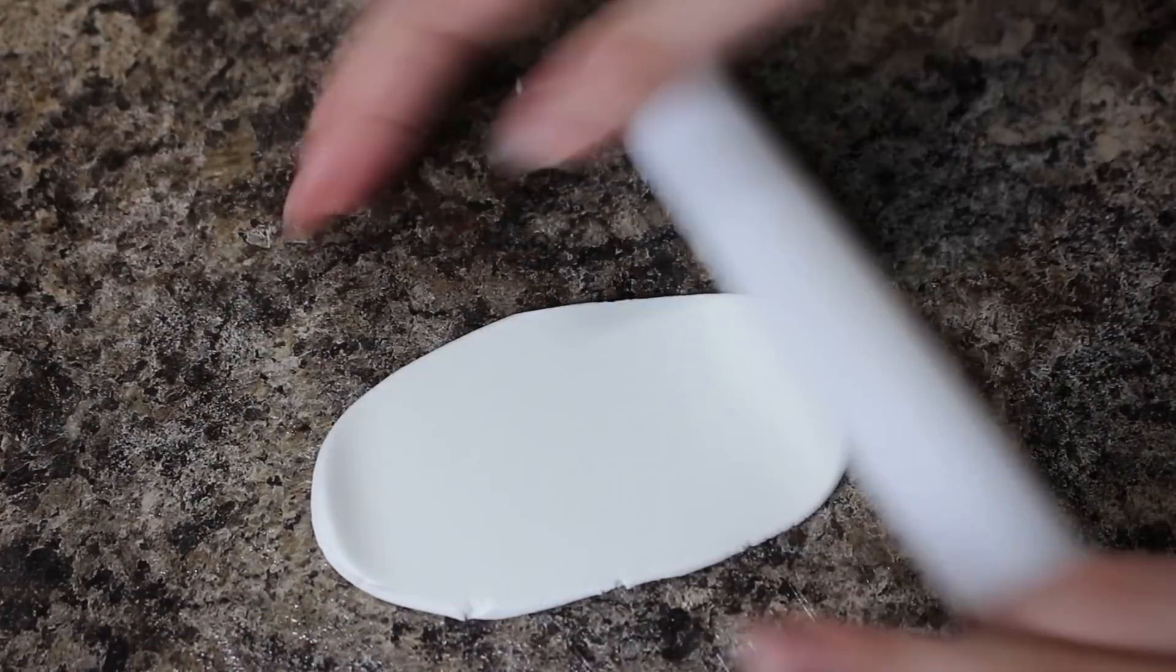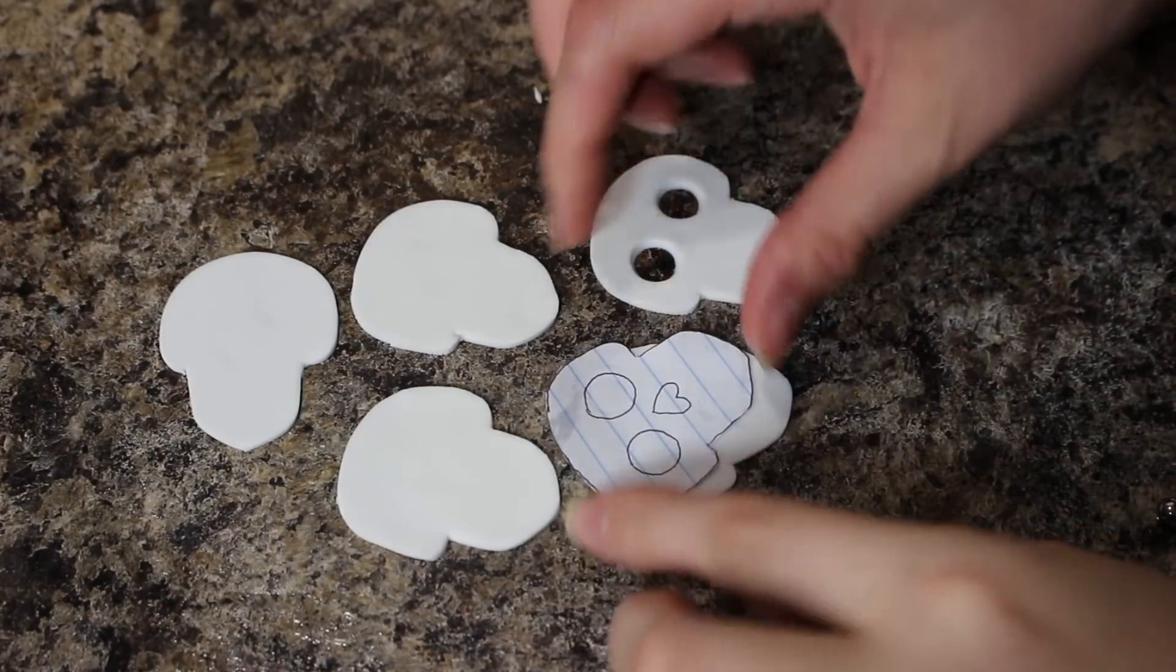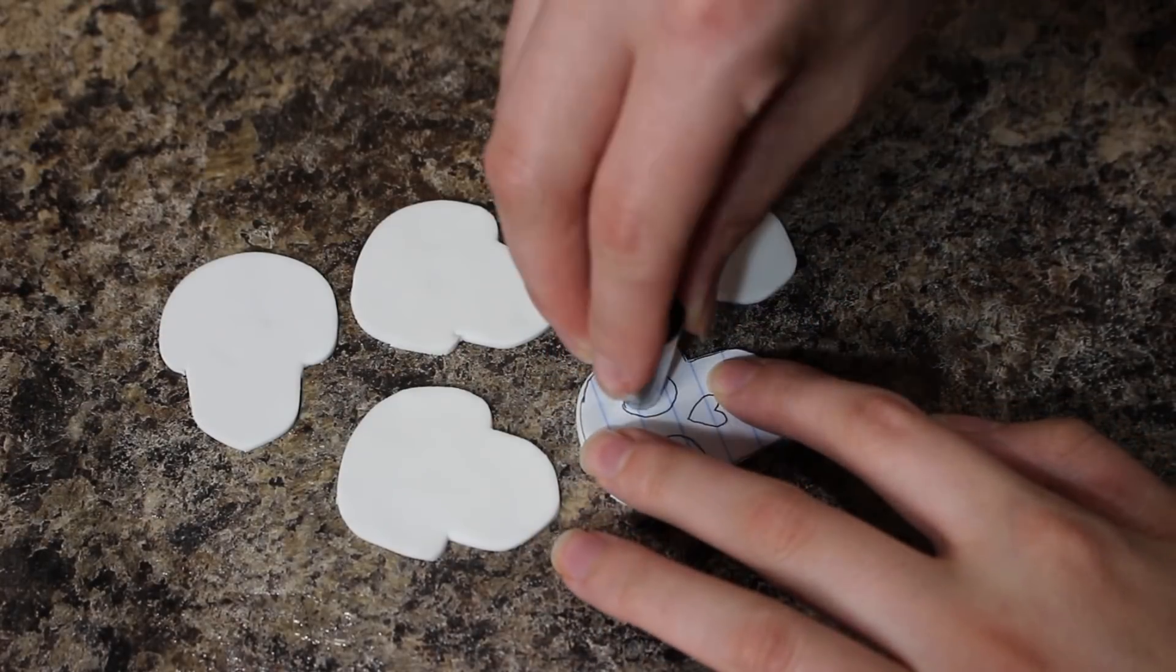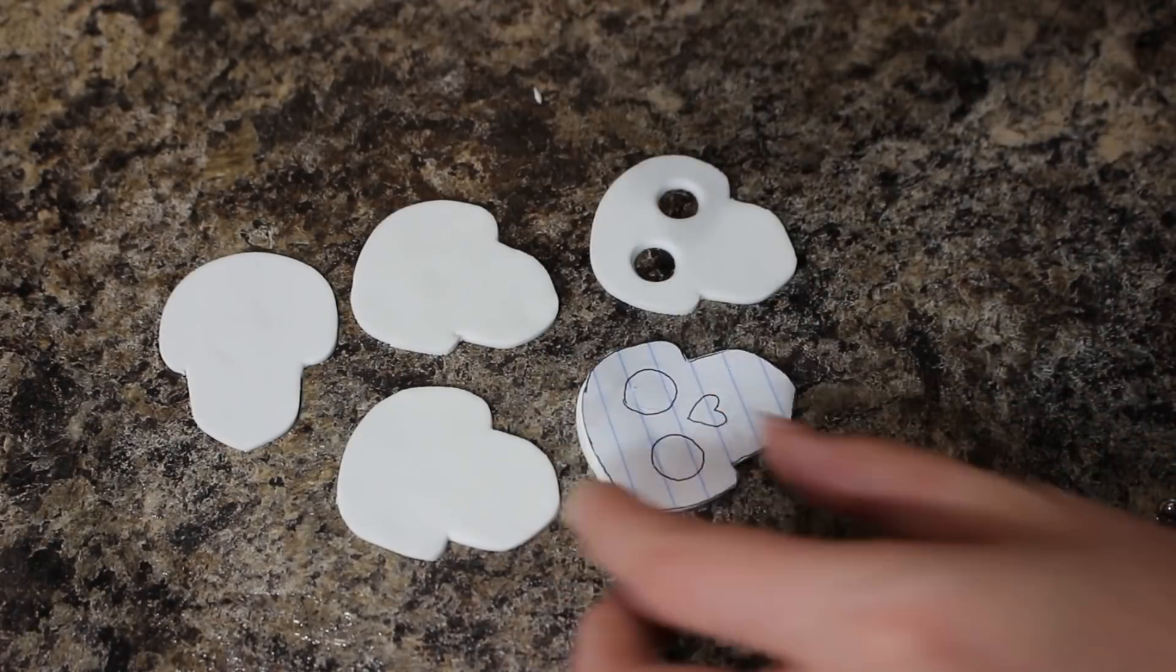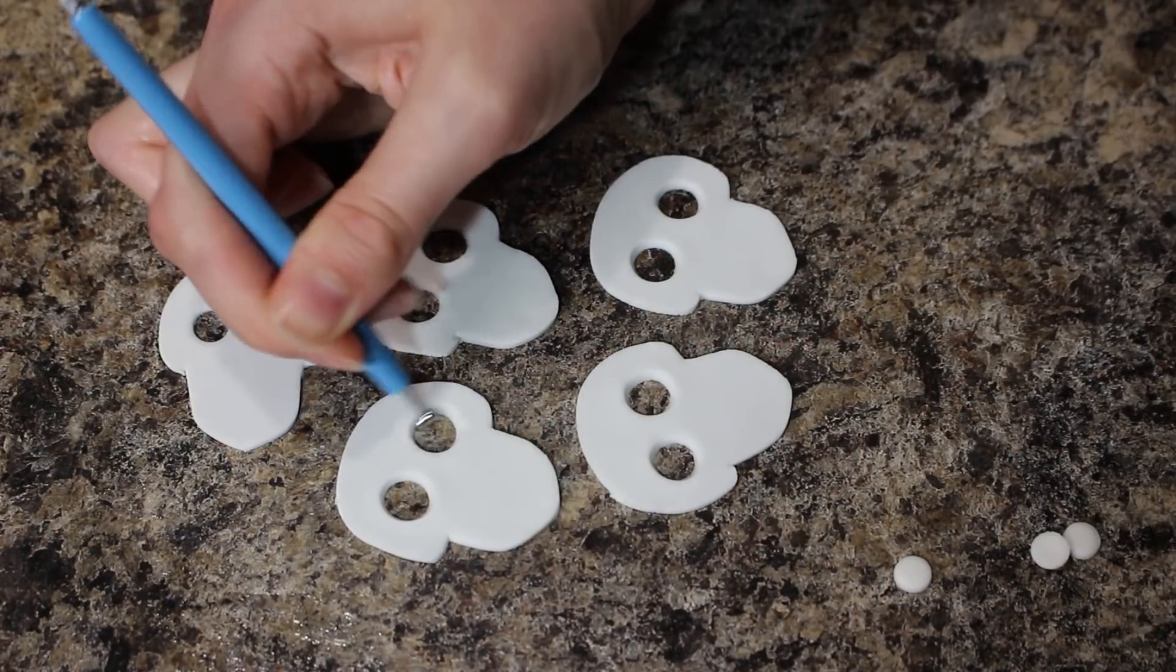To make my sugar skulls I used my template to cut the heads out of some white fondant again using my exacto knife and then I just cut the holes out using a piping tip and because they weren't quite big enough for the eye sockets I used my balling tool just to make them a little bit bigger.